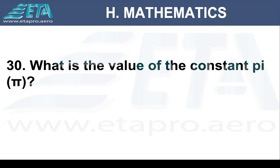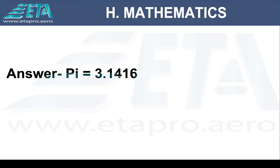What is the value of the constant pi? Pi equals 3.1416.